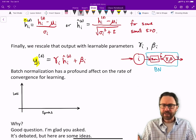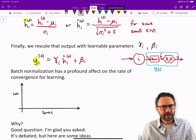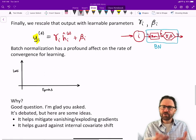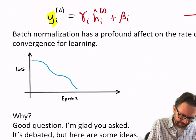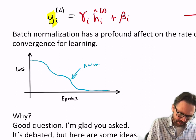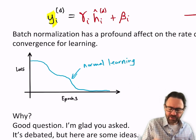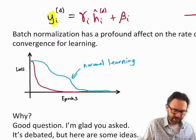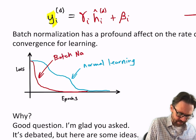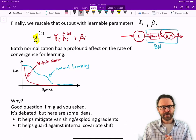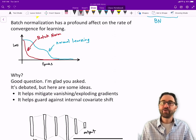Batch normalization has a profound effect on the rate of convergence for learning, and you will see this in your assignment. In particular, let's say we do normal learning without batch norm—we might get a learning curve that kind of looks like this. With batch norm you'll find something like this: it just drops down very quickly.